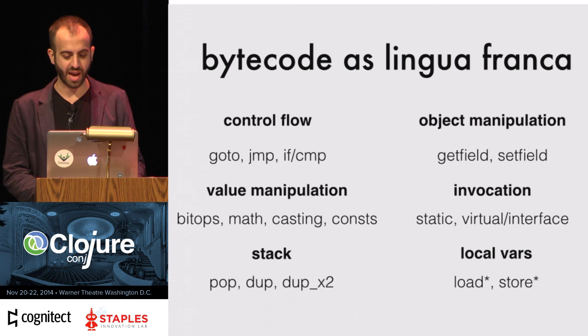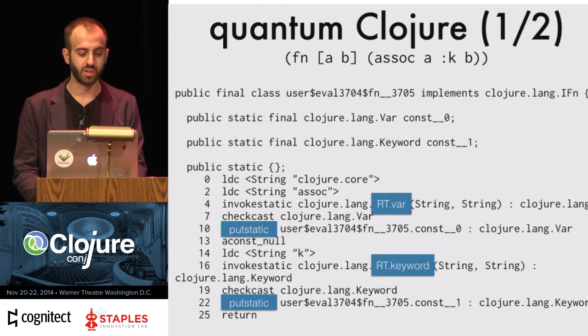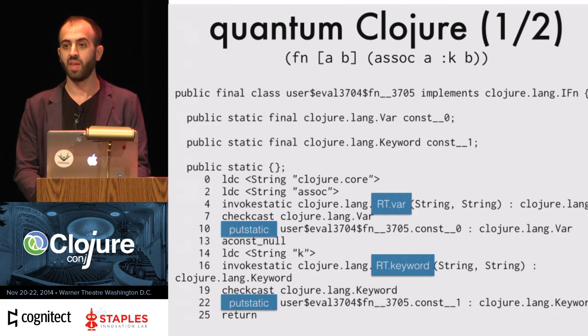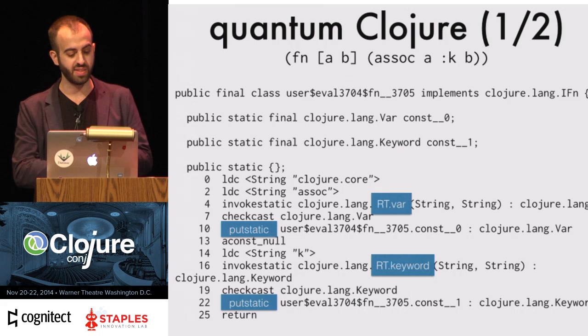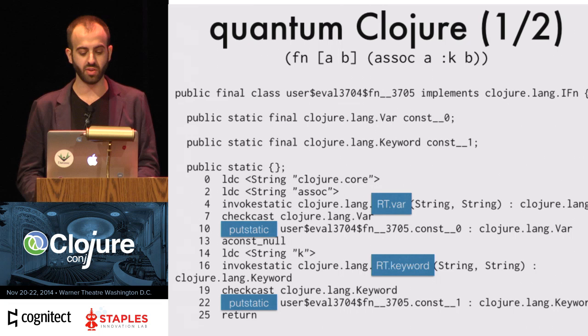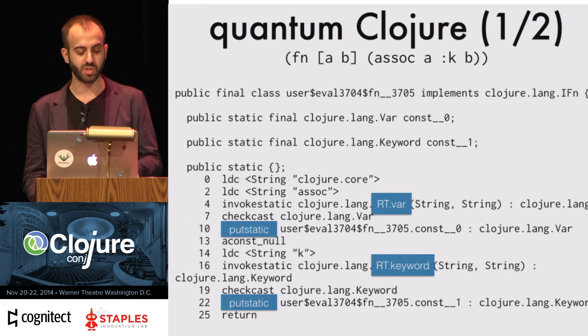I'm going to play human disassembler with a Clojure function. We have a simple function that takes two arguments, A and B, and returns a new map taking A and associating B at keyword K. I've decompiled this function and shown the logical instructions. You can see that what's generated is a class that implements ClojureLang IFn — the name of the class is an auto-generated symbol. This one's particularly awful because I ran it in the REPL, and that's just what happens.